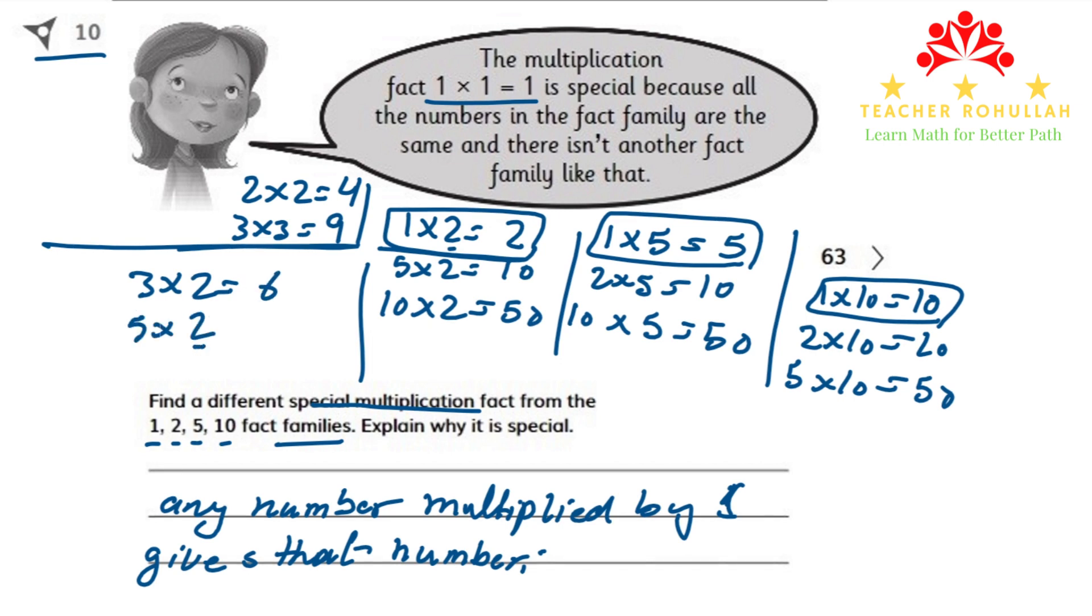1 is the only number when it's multiplied by another number, gives us the same number. This is how we can find a special number from the given fact families.